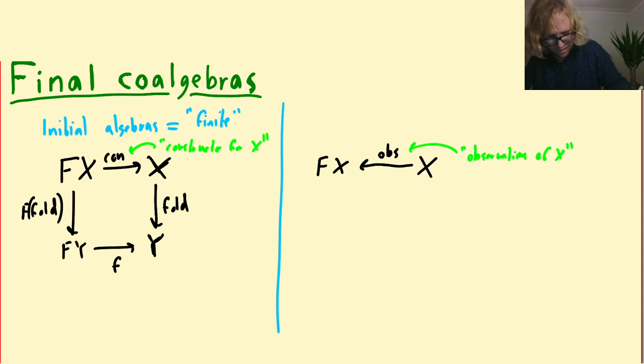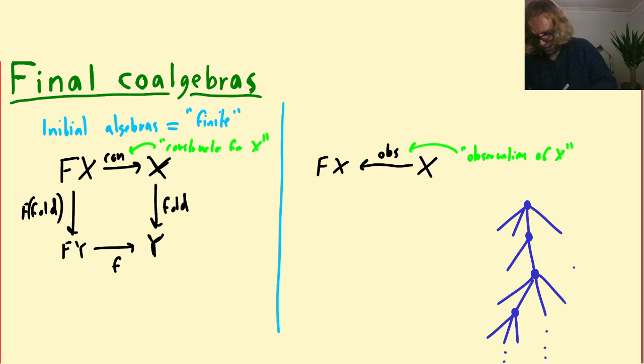So a good example to keep in mind is if we have an infinite tree, then we could always observe the root of the tree and that it has some subtrees. And then we can choose one of these subtrees and we can observe the root of that and that it has some subtrees. We can observe another root and we can keep going like this and it doesn't matter if this tree is infinitely deep. Because we can always make these observations as often as we want.